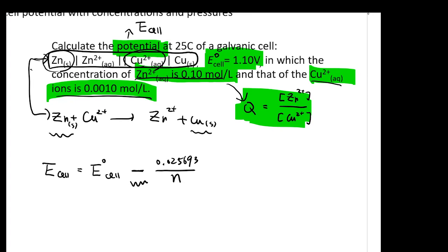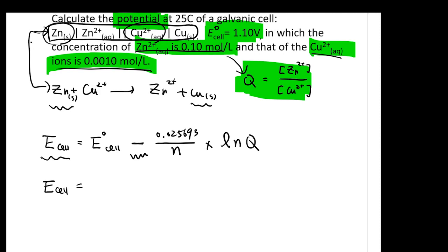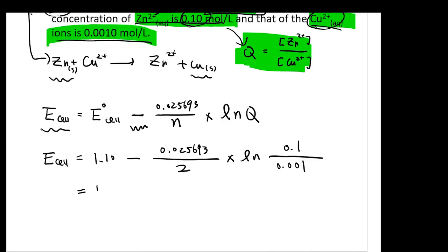0.025693 divided by the number of electrons that got transferred. We know it is equal to 2, times natural log Q. Q, you should know that it was defined as zinc 2 plus concentration over copper 2 plus concentration, 0.1 over 0.001. This is 1.10 minus this whole thing which is going to give you a value of 0.059. Therefore, you can get a value of 1.04 volts.